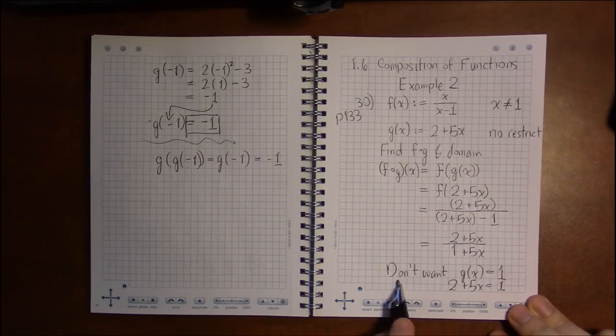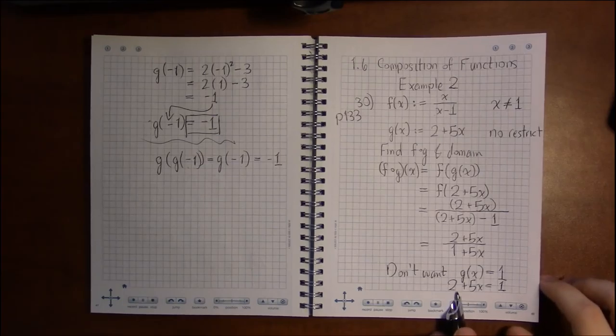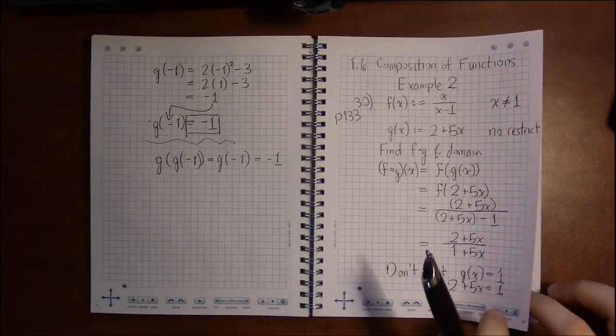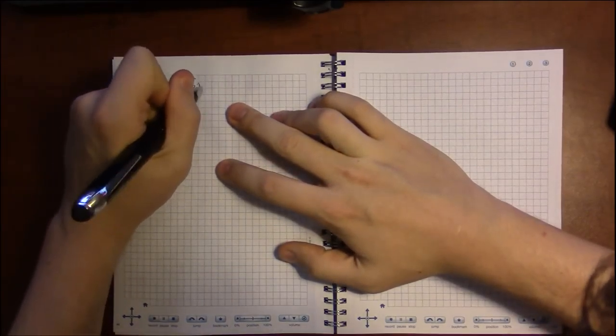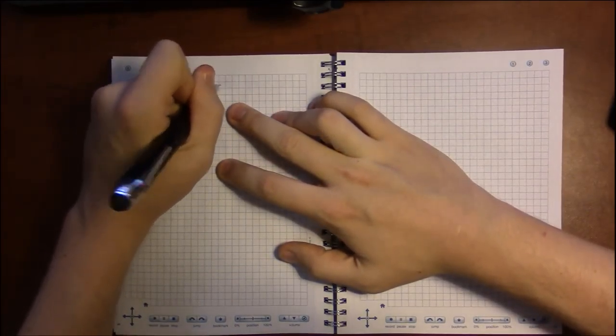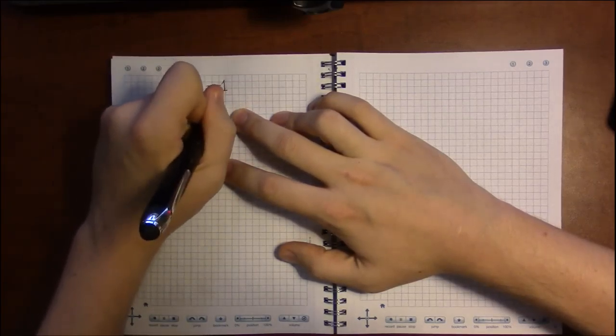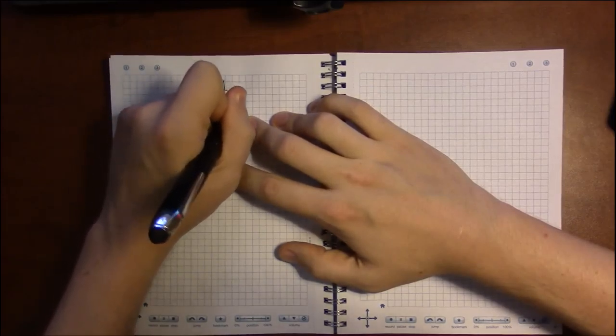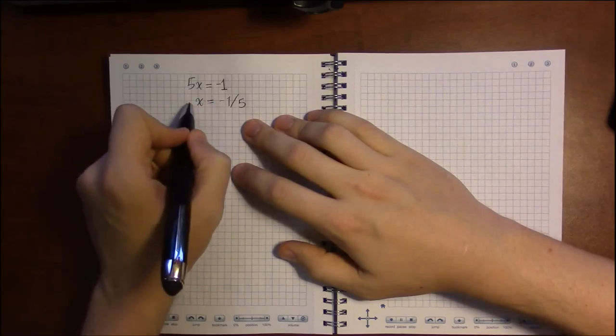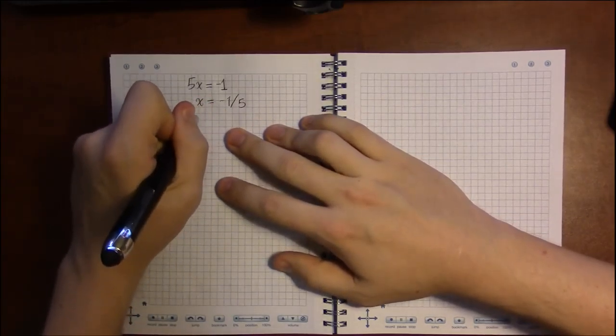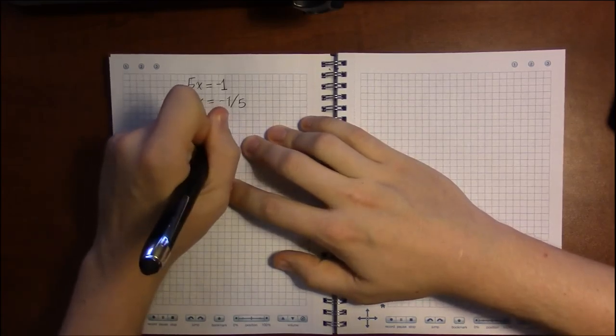So in this case, if we subtract 2 from both sides, we'll get 5x equals minus 1. And then dividing by 5, we get x equals minus 1 over 5. So we don't want this to happen, so the domain of f of g...